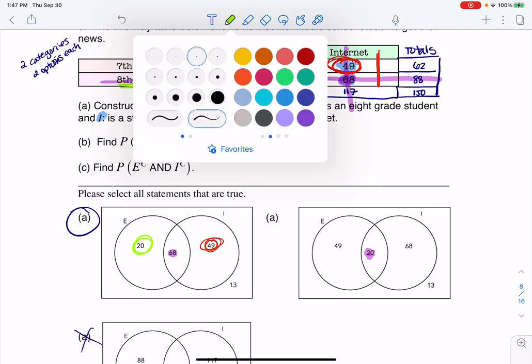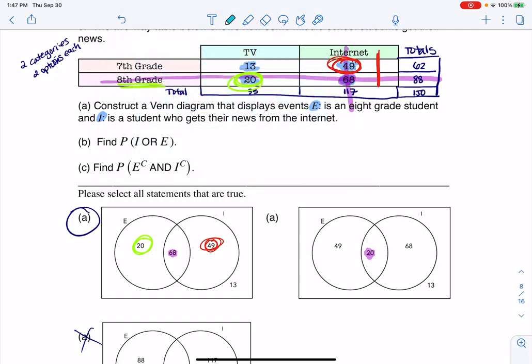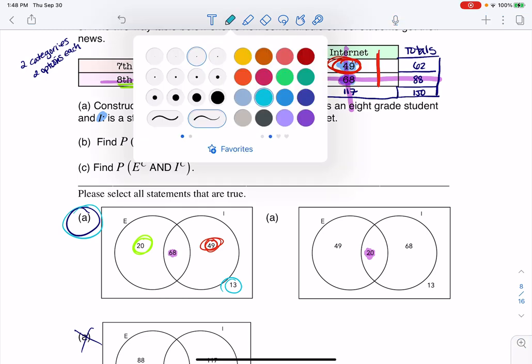I will go with turquoise. And if I circle that, those 13 folks, they're neither 8th graders, nor do they get their information from the internet, because basically they're 7th grade folks that get their information or their news from the TV. And that's where you see them in there. So this is our correct option here.